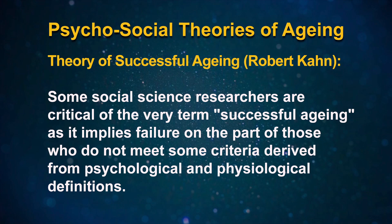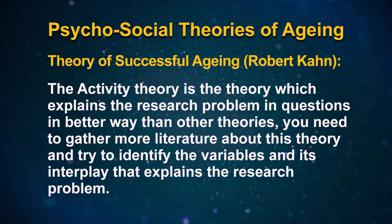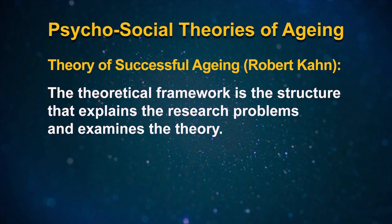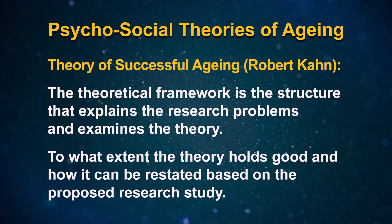On examination of these theories, suppose you find that the activity theory best explains the research problem. You need to gather more literature about this theory and try to identify the variables and their interplay that explain the research problem. Based on the activity theory's interrelated concepts, constructs, and variables, we prepare our theoretical framework. Thus, the theoretical framework is the structure that explains the research problem and examines the theory. It also tells us to what extent the theory holds good and how it can be restated based on the proposed research study.